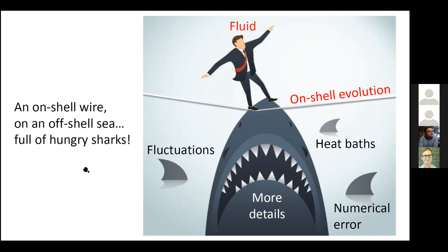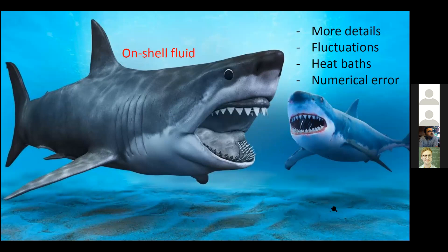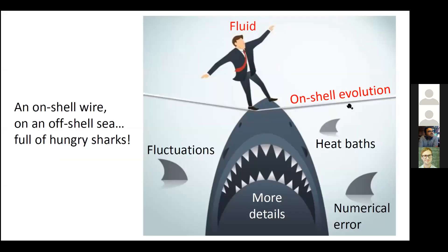This is not only a problem when you add additional details — we have also seen that it didn't make sense from the point of view of fluctuations. Furthermore, you might also consider that when you make your fluid interact with a heat bath, the heat bath breaks the evolution and the fluid becomes totally crazy. You don't want a situation like this. What you want is your ocean fluid to be the biggest shark in the sea — you want to be able to feed your theory including details, fluctuations, and heat baths. Including stuff should improve your description, not destroy your theory.